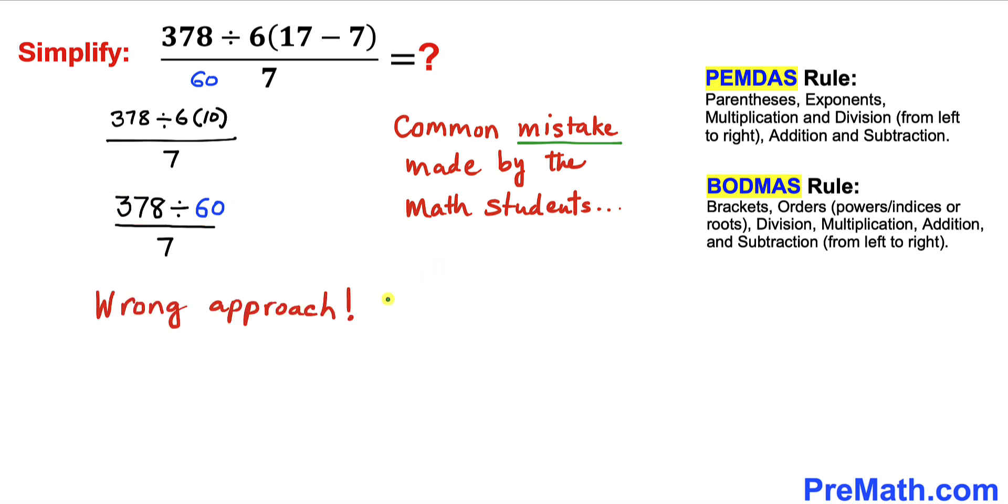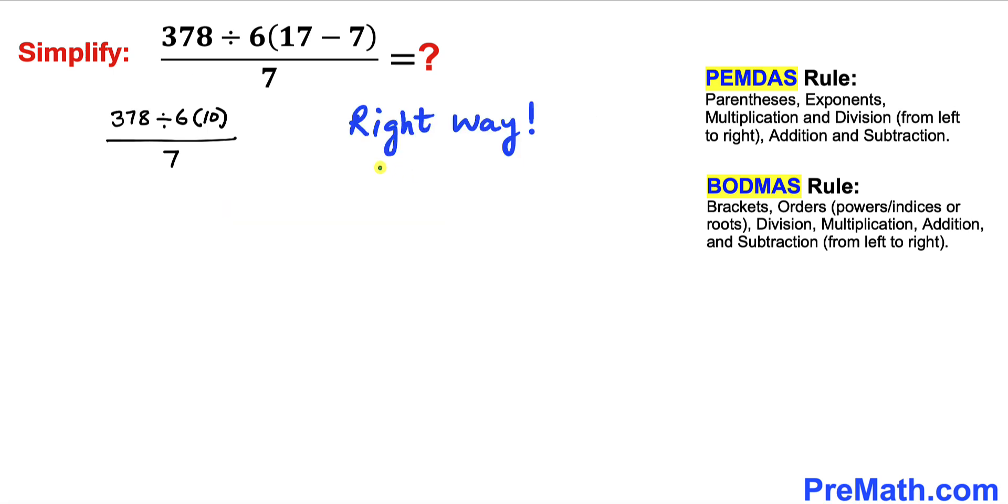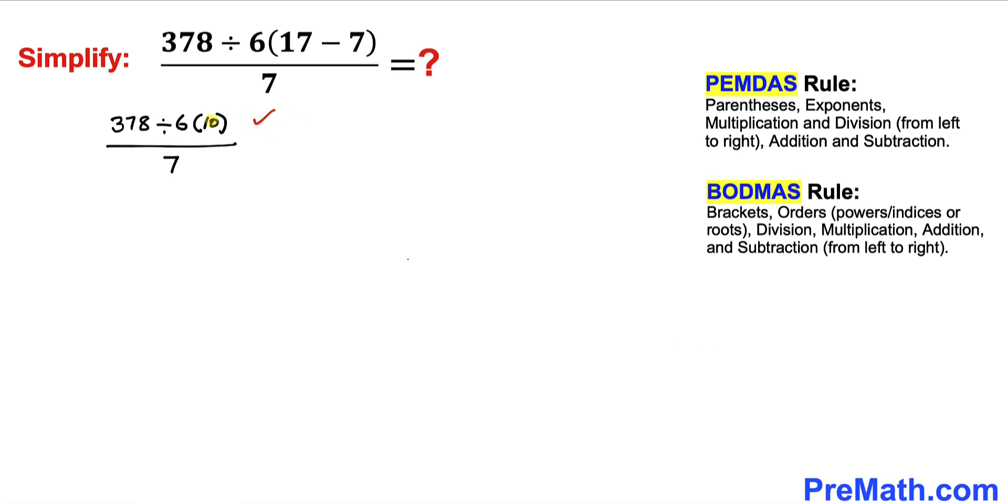Now let me show you the right way to deal with this problem. Let's focus on the numerator part. We got a division and a multiplication between 6 and 10. We have to follow the basic rule: go from left to right. We can see the division operation is coming first, so we have to take care of this one first.